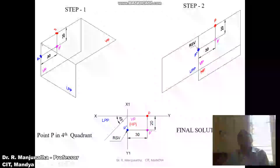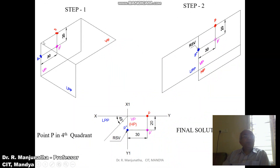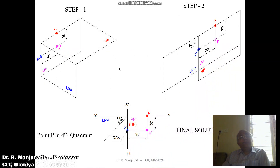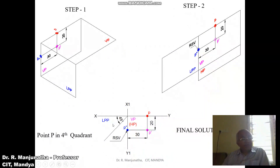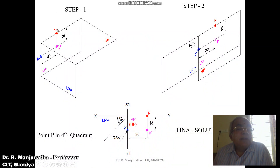Now we consider the same problem in the fourth quadrant. In the fourth quadrant, 0 degrees to 270 degrees — the point is on VP. When you look from the front view, the point is below HP and in front of VP. Since it is in front of VP, it should also be in front of LPP, so you need to get the right side view. Looking from the front view, the distance below HP is 20mm — the image will form on the vertical plane. When you look from the top view, point p will be on HP.